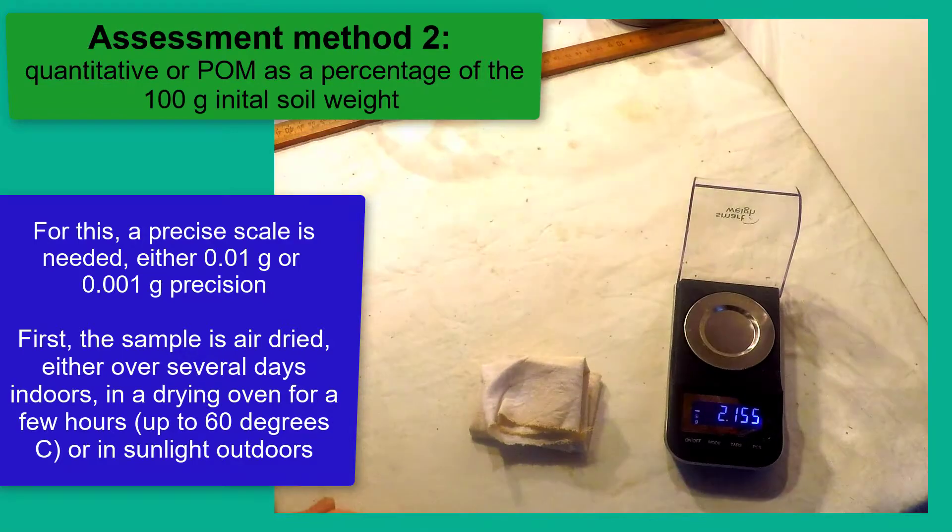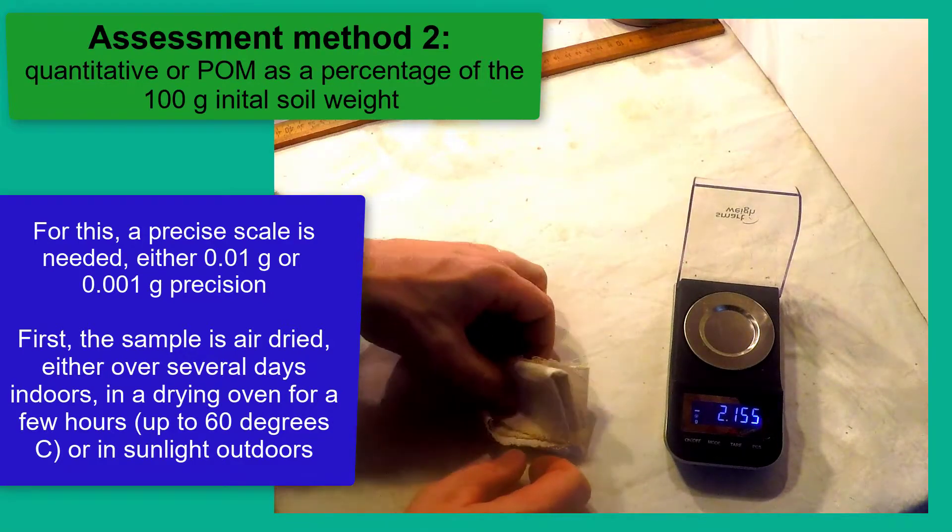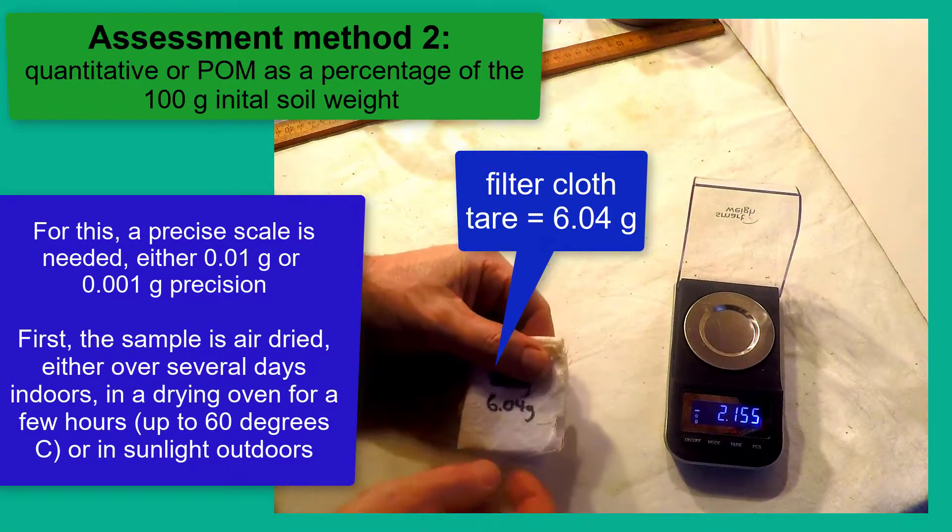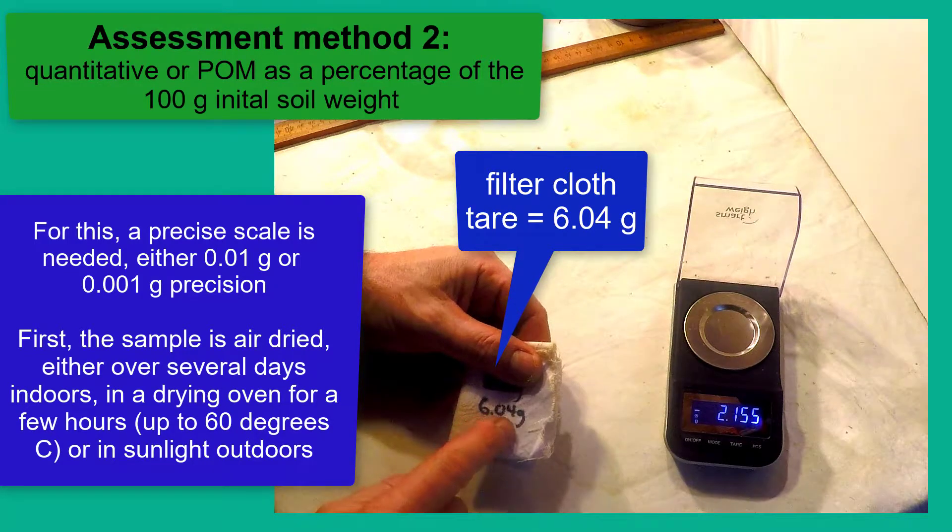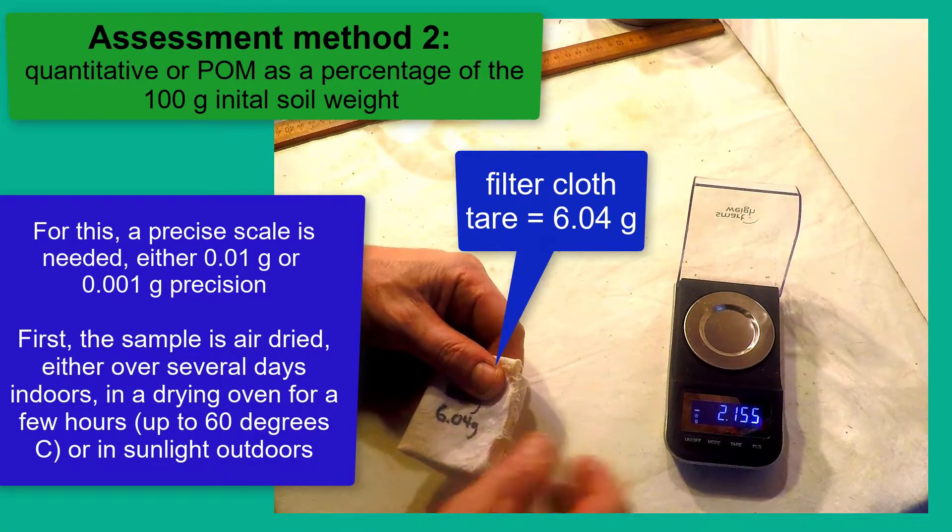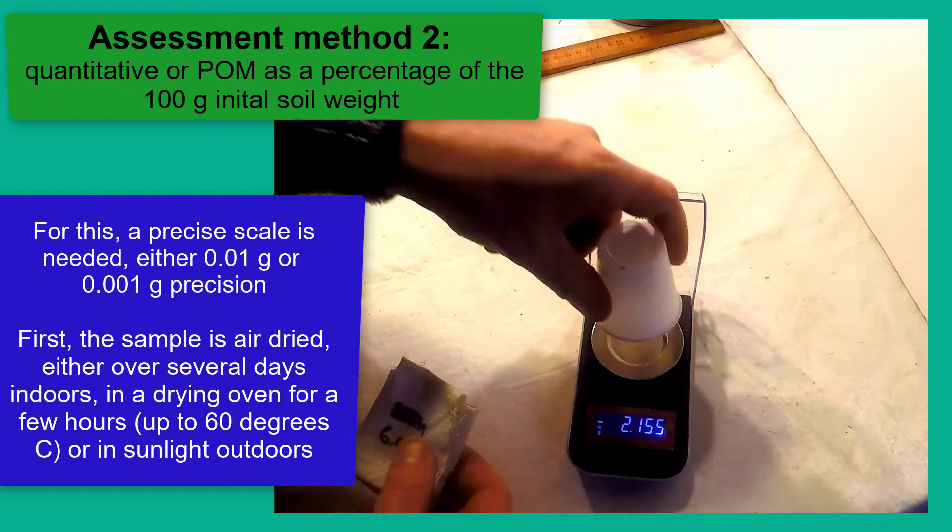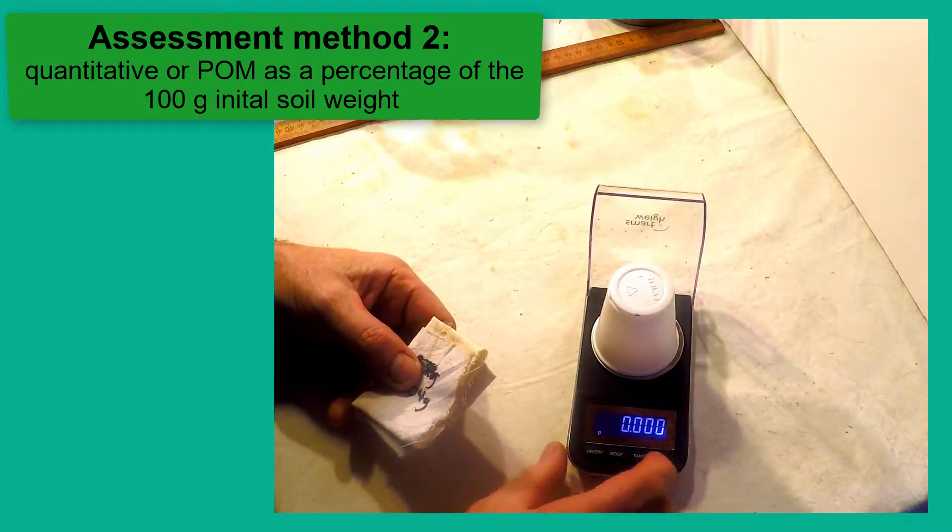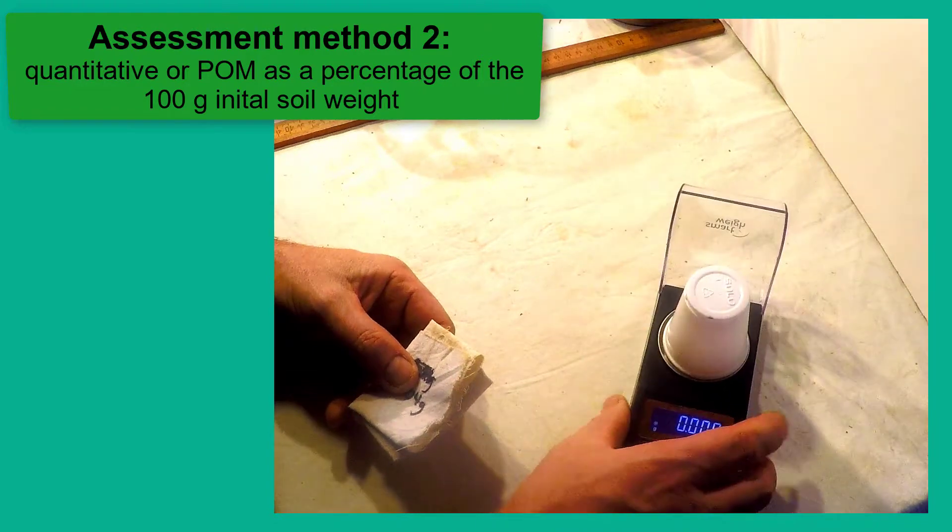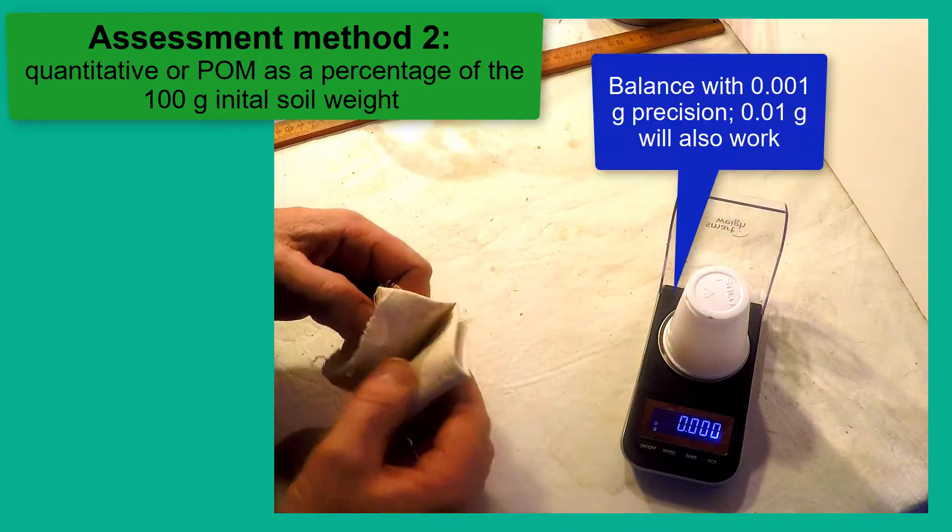If you have access to a precision balance with either one hundredth of a gram or one milligram precision, you can also dry the POM inside the cloth and weigh it. Since it is easy to dry POM in this way, it may be useful to dry and keep the sample in any case so that the POM can be weighed at some future point.